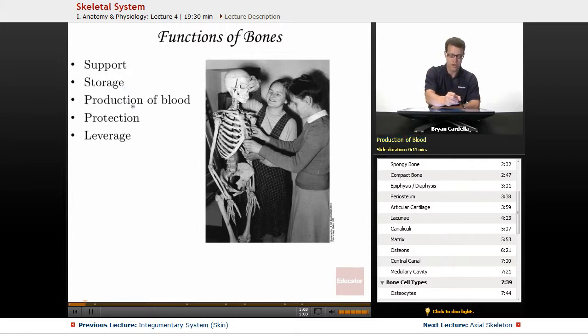As I mentioned a second ago, production of blood. Not just red blood cells. All of your blood cells are produced in the marrow within your bones. Protection. Your skull, your rib cage, leverage, the pelvic bones. There's a lot of protection going on.